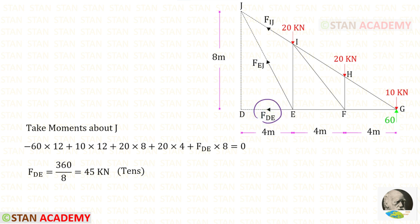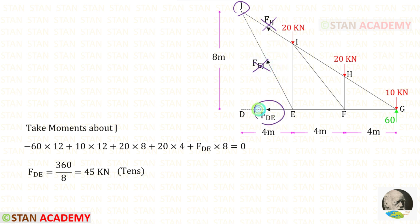We have to take moment about J because it will be easy. When we take moment about J, we should not consider FiJ and FeJ. The remaining forces are Fde, 20, 20, 10, and 60.